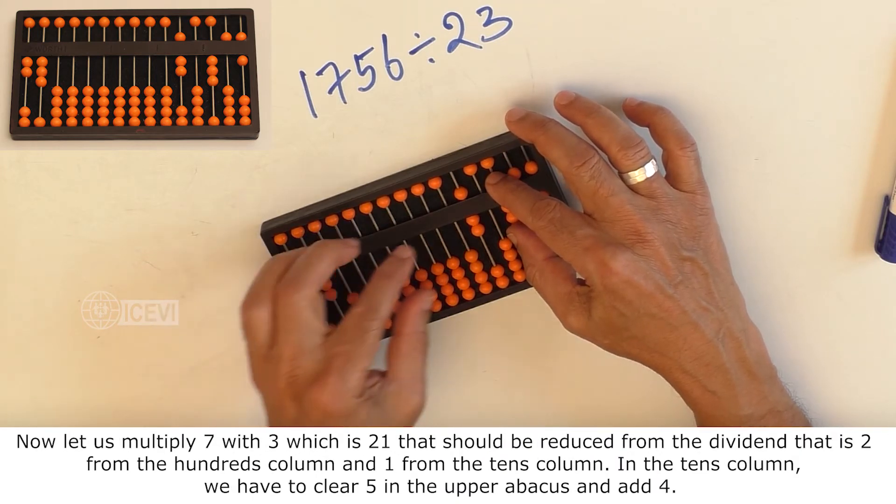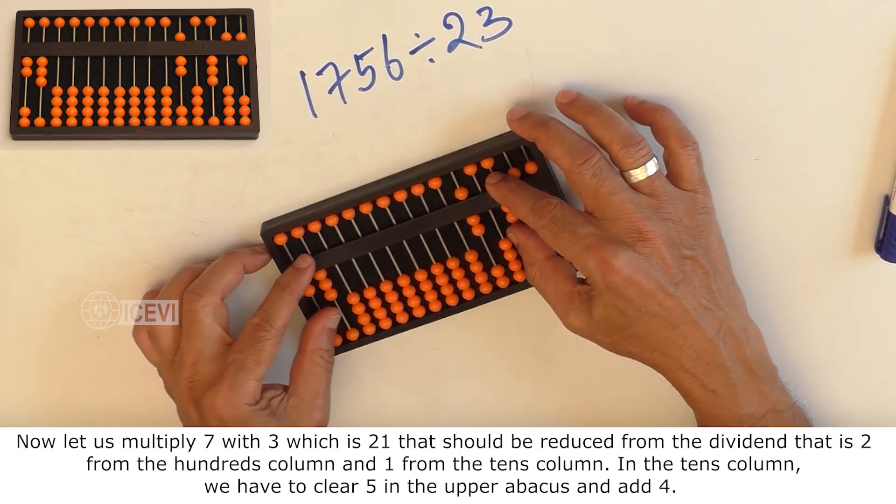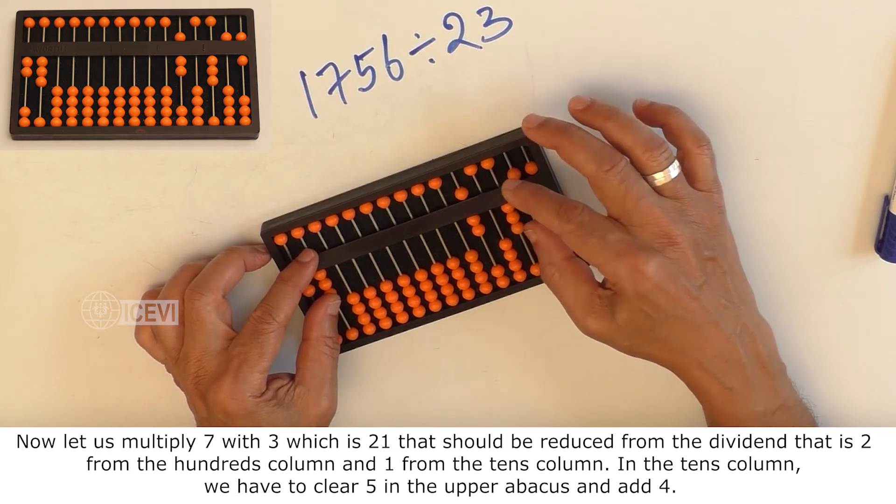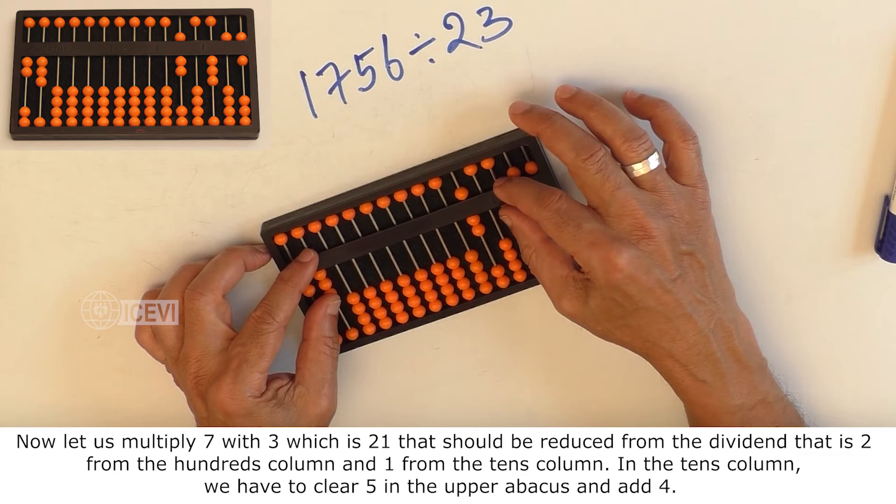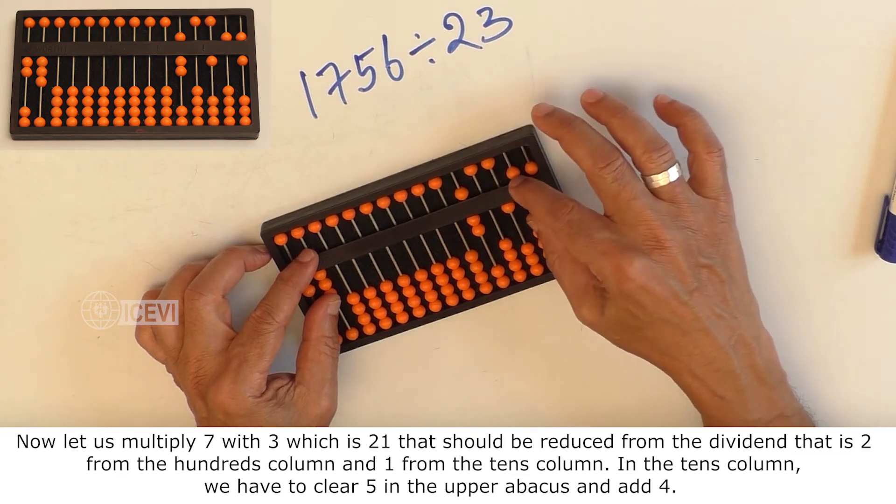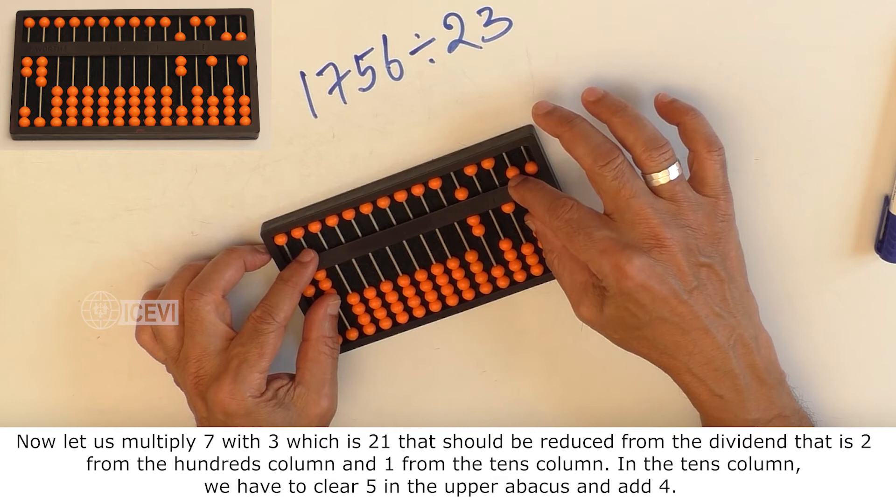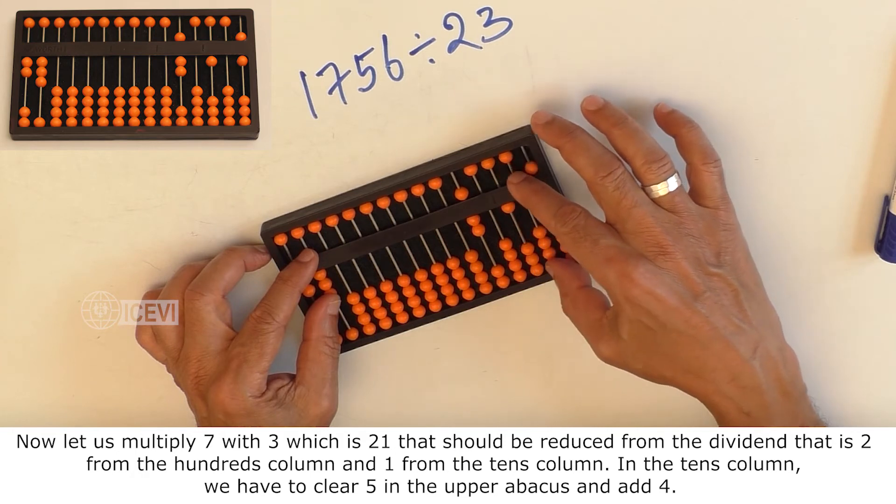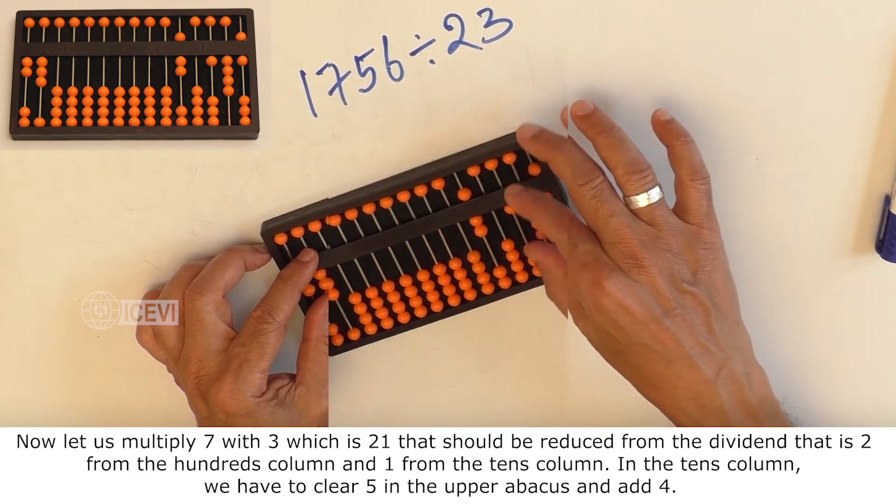Now let us multiply 7 with 3, which is 21, that should be reduced from the dividend, that is 2 from the hundreds column and 1 from the tens column. In the tens column, we have to clear 5 in the upper Abacus and add 4.